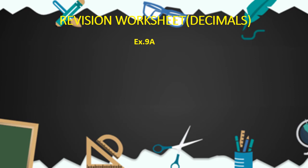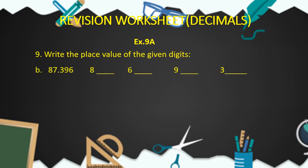Now children, let's come to question number 9: write the place value of the given digits. For part B, the decimal fraction is 87.396, and we have to find out the place value of the digits 8, 6, 9, and 3. We can see that 8 is at the tens place, so the place value of 8 is 80. 6 is at the thousandths place, so the place value of 6 is 6 upon 1000. 9 is at the hundredths place, so the place value of 9 is 9 upon 100. 3 is at the tenths place, so the place value of 3 is 3 by 10.